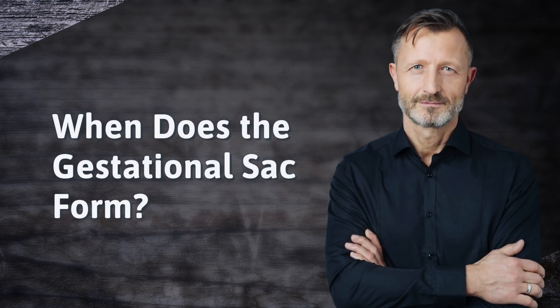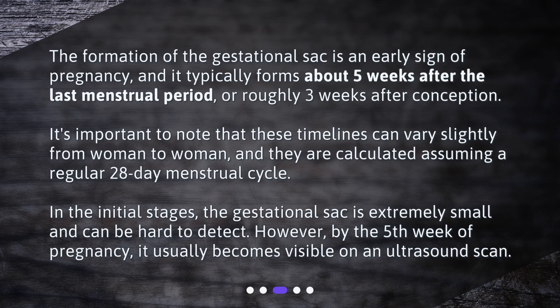When does the gestational sac form? The formation of the gestational sac is an early sign of pregnancy, and it typically forms about five weeks after the last menstrual period, or roughly three weeks after conception. It's important to note that these timelines can vary slightly from woman to woman, and they are calculated assuming a regular 28-day menstrual cycle.